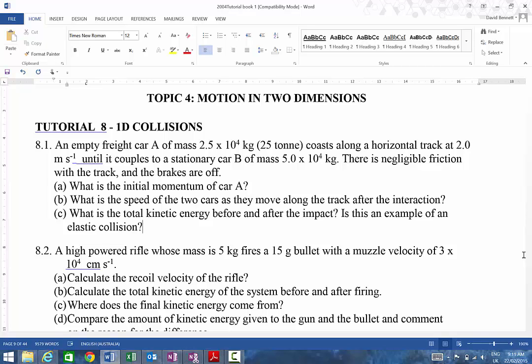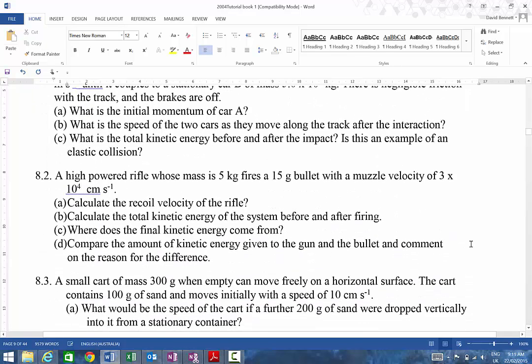This is a typical sort of question that you might get. The other one you might have seen is something like a high-powered rifle whose mass is five kilograms fires a 15 gram bullet with a muzzle velocity. Calculate the recoil. That's 1D because the motion's in only one direction.